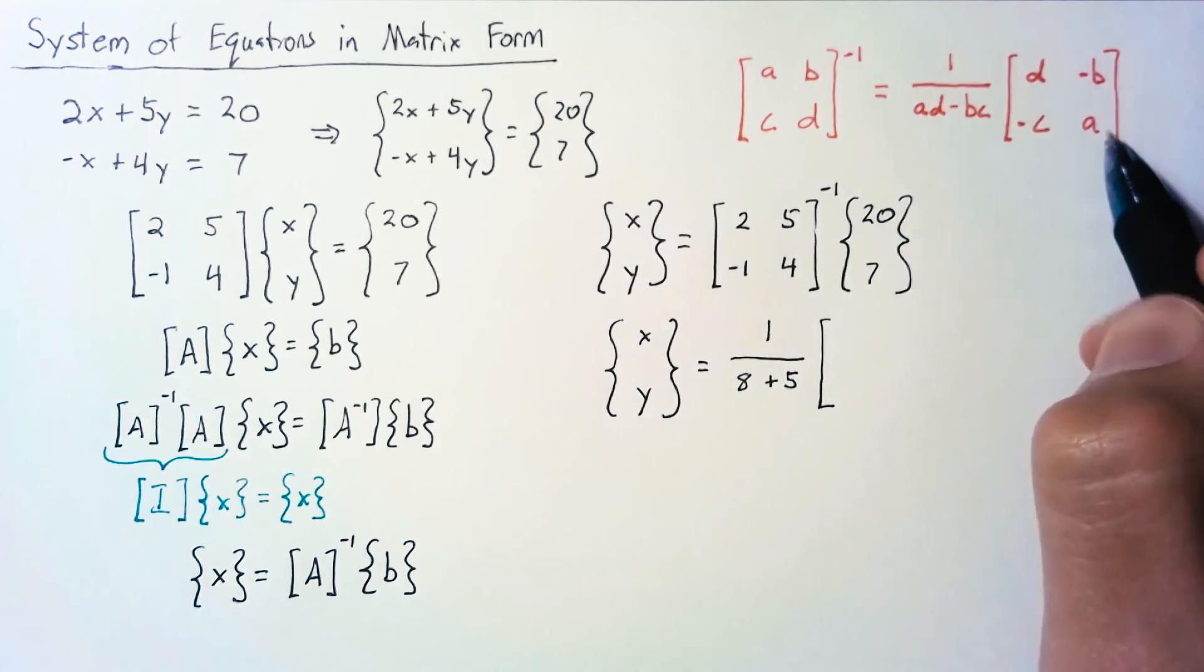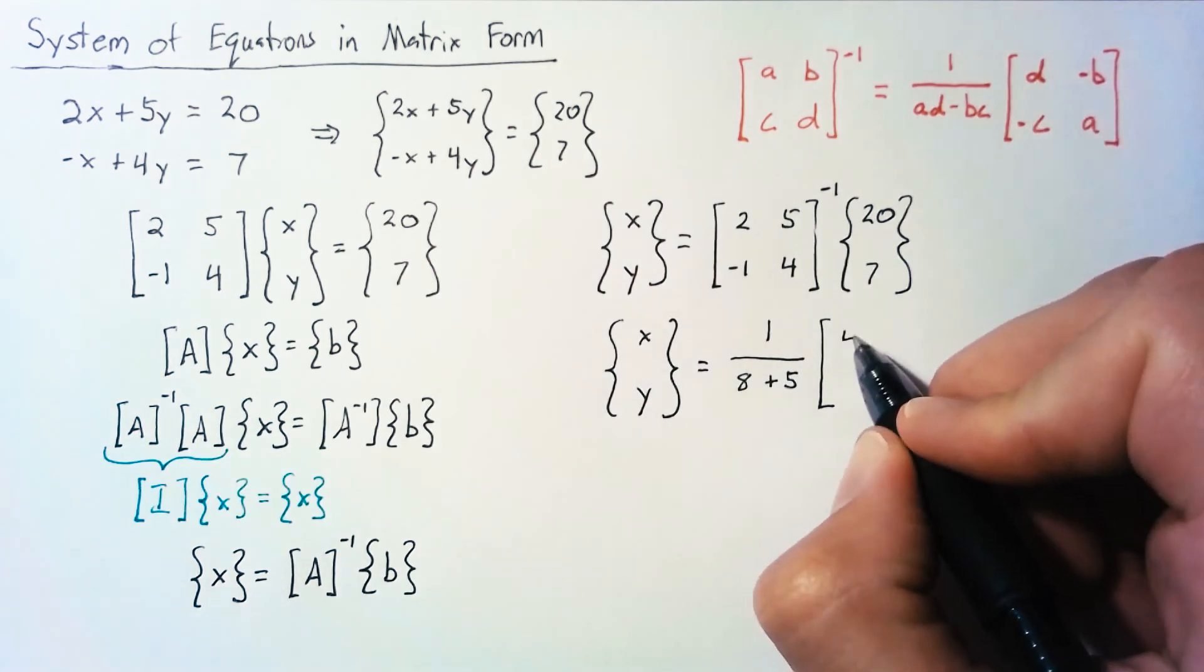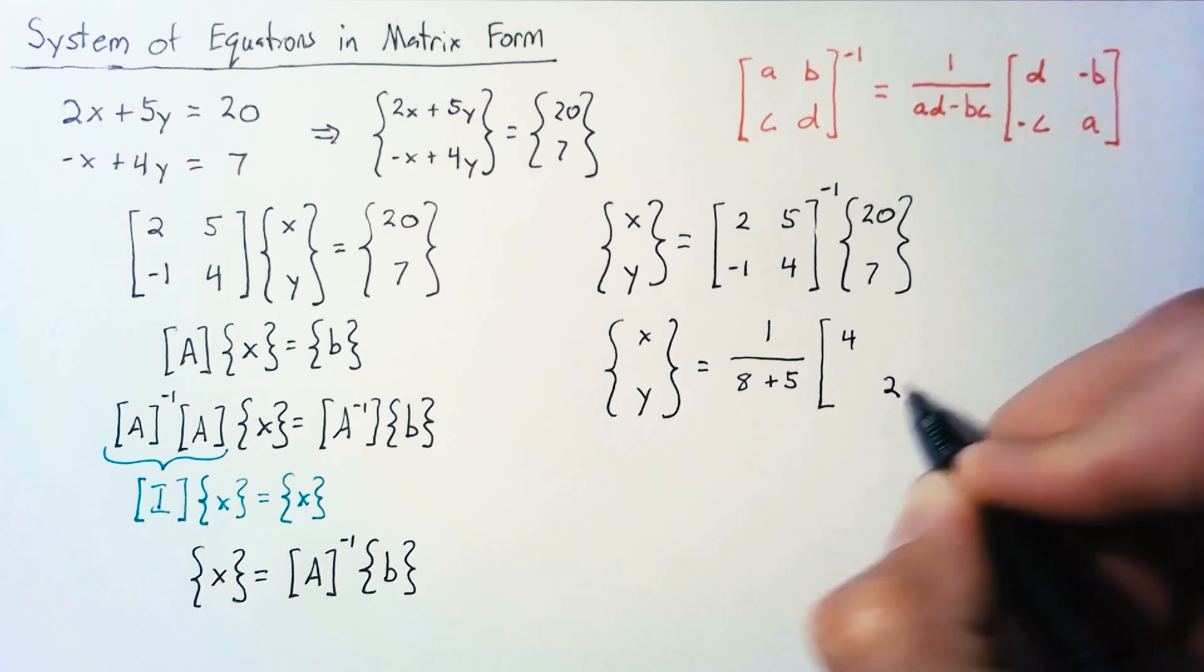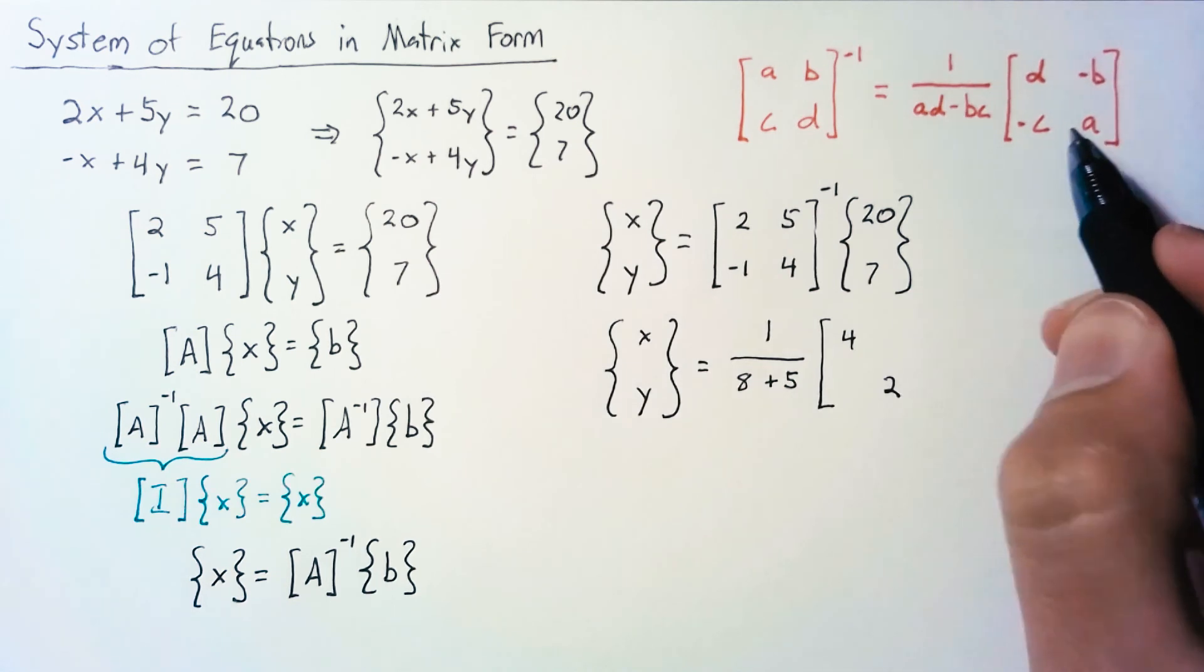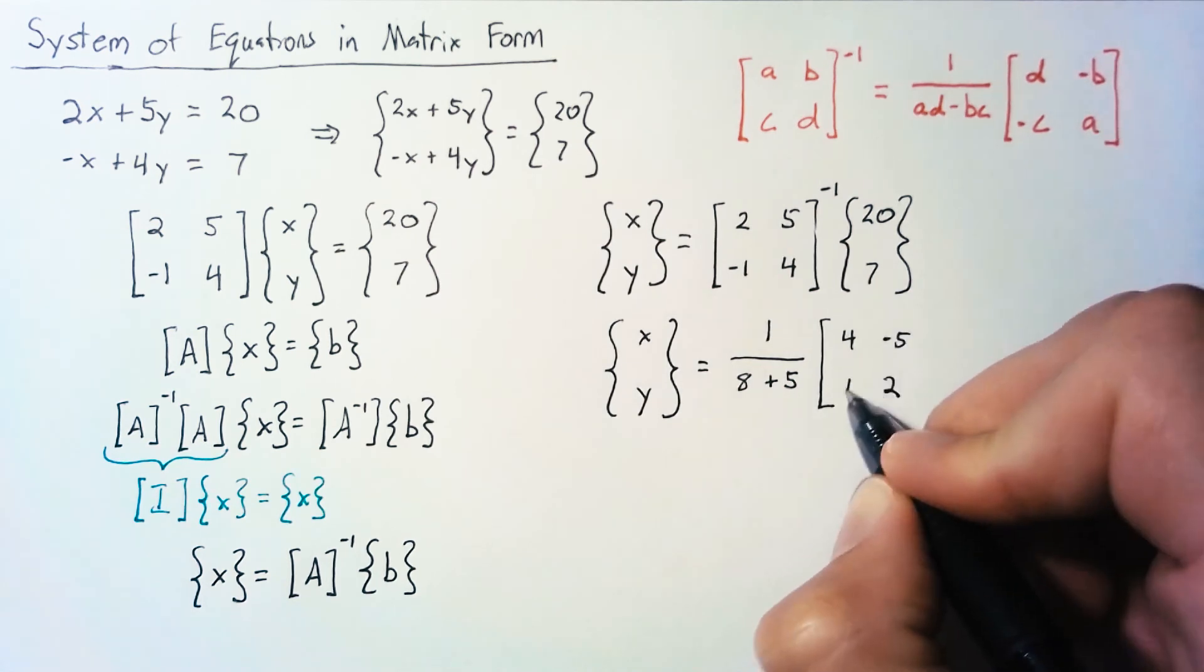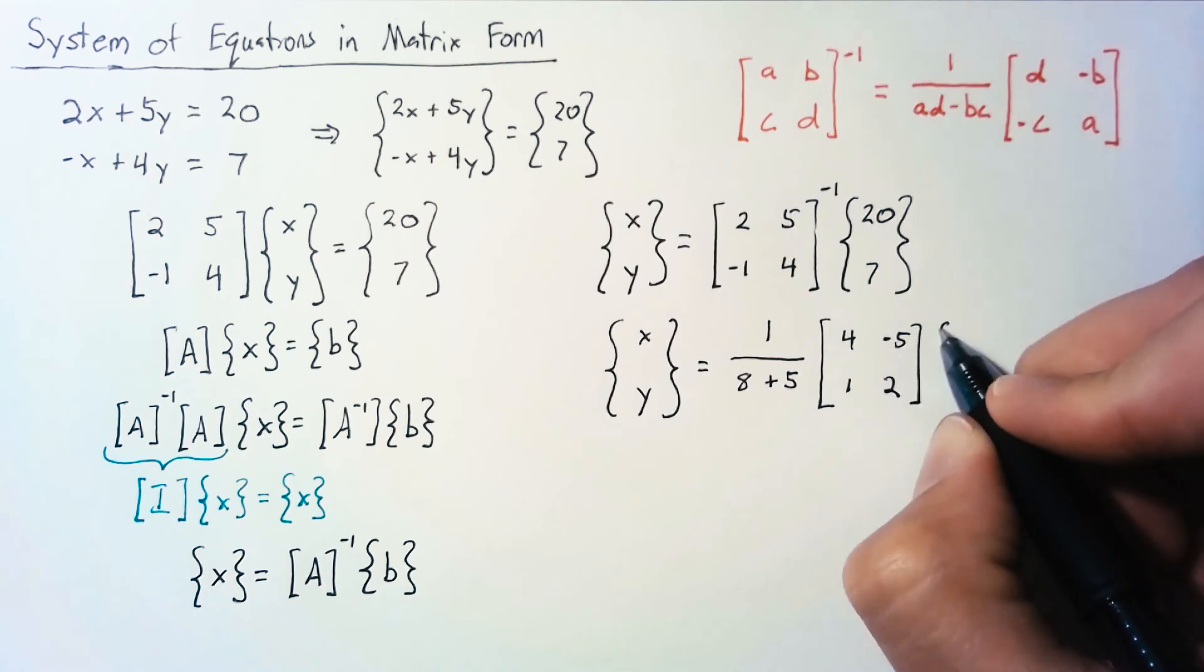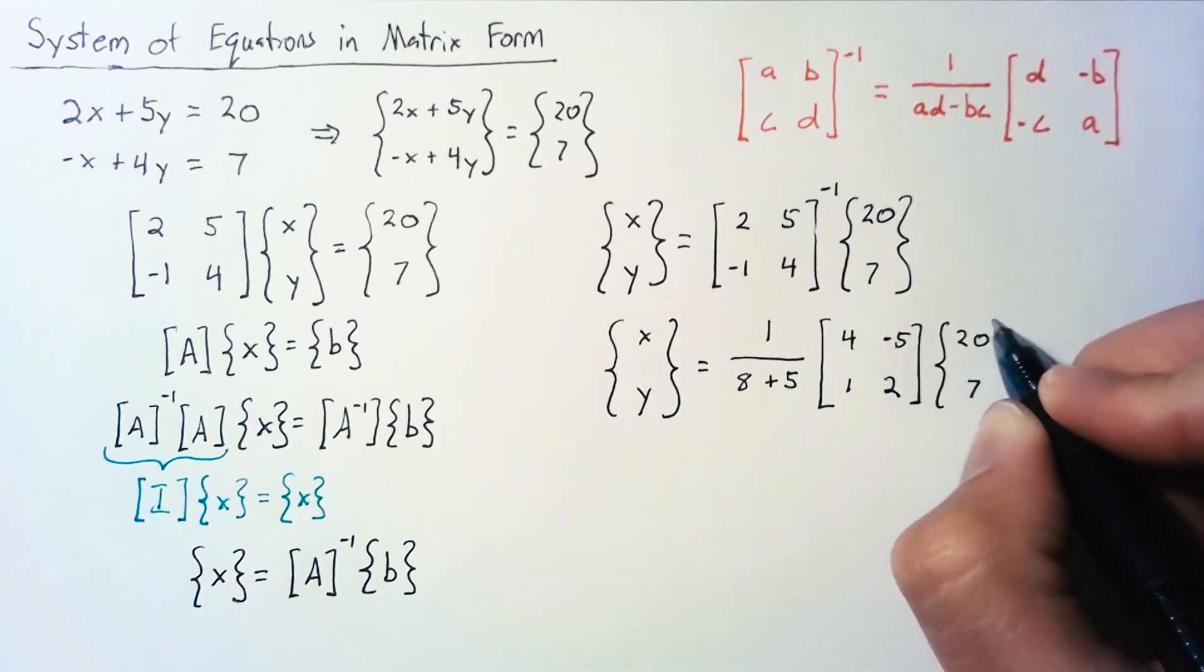So we're swapping the position of A and D, so this will be 4 and 2 along the diagonal. And then we're just taking the negative of the B and C, so it'll be negative 5 and positive 1. And that's going to be multiplied by this 20 and this 7.